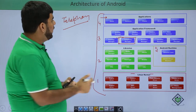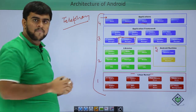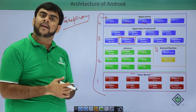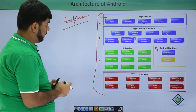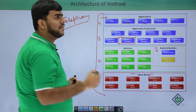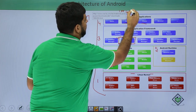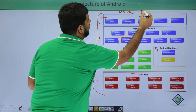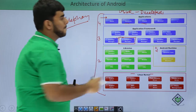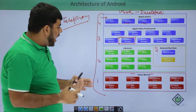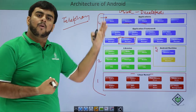Above the application framework we have applications — apps that are built into our phone like Contacts, Phone, Browser, and Camera. These applications available in the Android phone itself are known as built-in applications. Then, as a user or developer, we develop applications above this layer, and we call them user-developed applications.